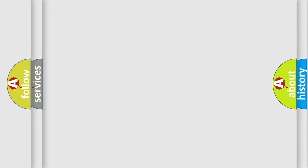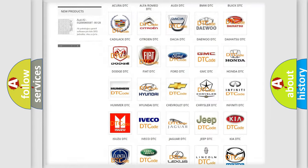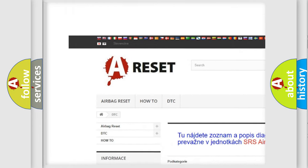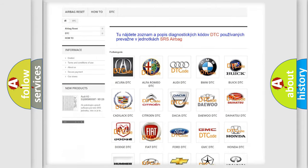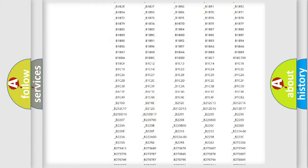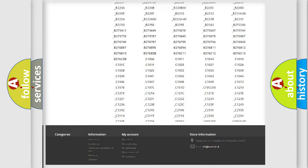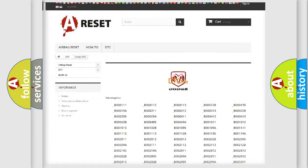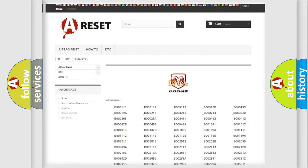Our website airbagreset.sk produces useful videos for you. You do not have to go through the OBD2 protocol anymore to know how to troubleshoot any car breakdown. You will find all the diagnostic codes that can be diagnosed in Dodge vehicles, also many other useful things.